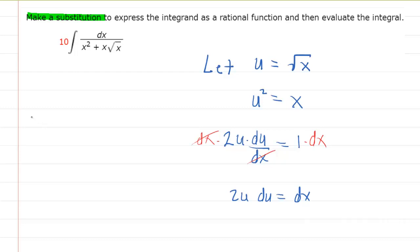So let's go back to the original problem. We have 10 times the integral. Now, the numerator has dx in it, but we just determined that dx is going to be 2u du. And then put this over our denominator.